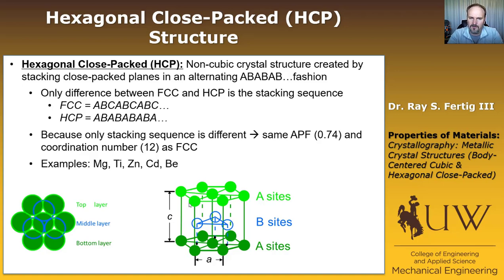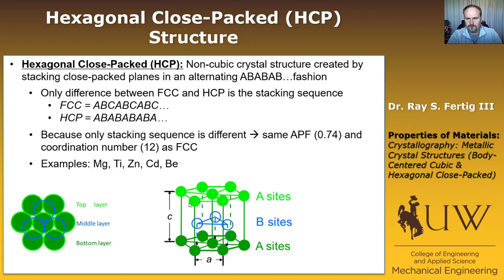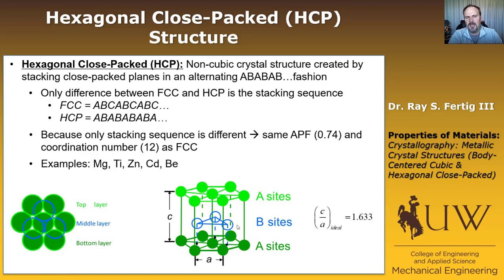Some examples of metals that take on this HCP structure include magnesium, titanium, zinc, cadmium, and beryllium — some of the more common metals you may have heard of. It's a distinctly different structure because it's not cubic. In the case where everything is stacked as tightly as possible from layer to layer, the C over A ratio can be computed, and in the ideal case C over A is 1.633.